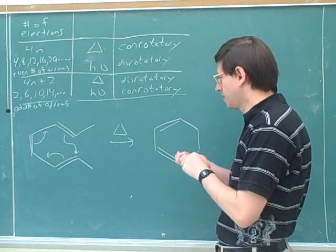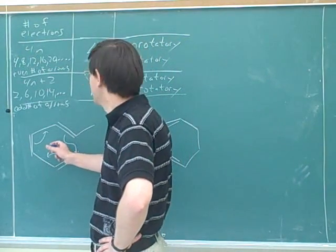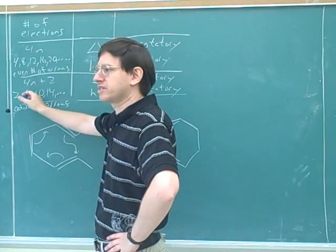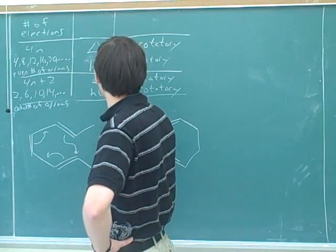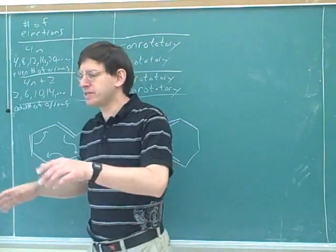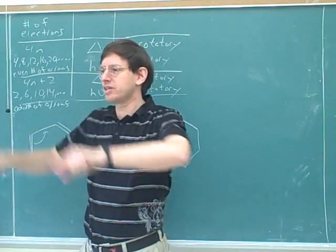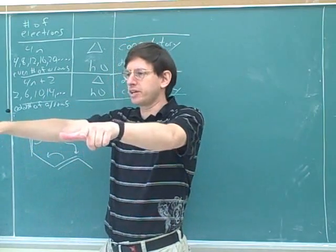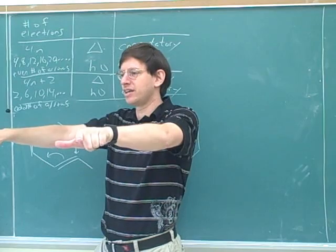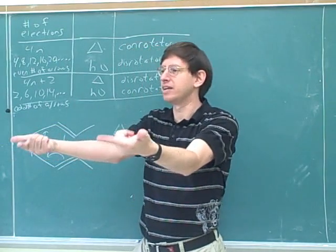Is this going to be conrotatory or disrotatory? Disrotatory — that sounds right. Here we have an odd number of arrows, or you could say six electrons total are participating. It's thermal, so it's going to be disrotatory. Now remember there are two different positions for your thumbs: the flat position and the up-down position. We're starting trigonally planar, so we start flat. Should this thumb be inside or outside? Both thumbs should start on the outside in a flat position.